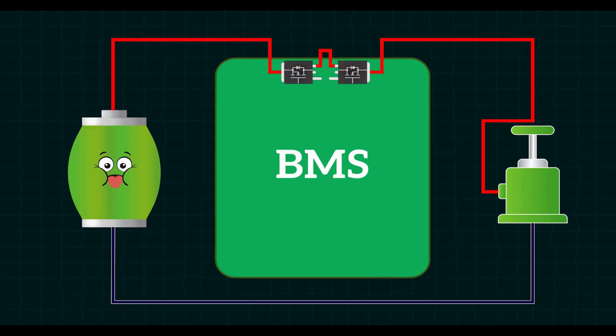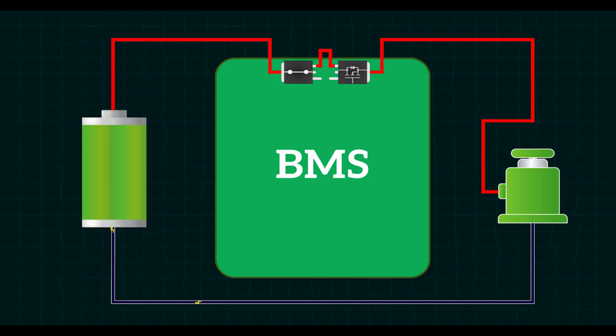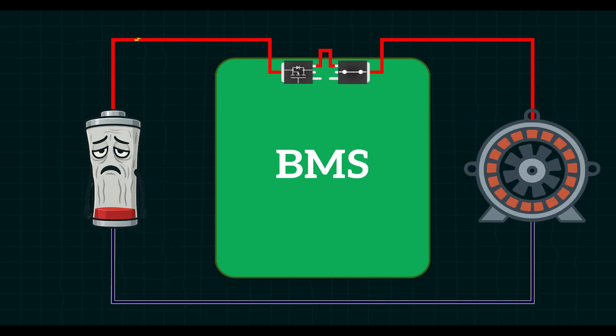Then overcharge and over-discharge protection. Charging a battery too much can be dangerous. It could overheat or even catch fire. Discharging it too much can also permanently damage the battery. Controlling MOSFETs solve this by acting as gatekeepers. During charging, if the battery voltage goes too high, the MOSFET switches off to stop more current from flowing in. During discharging, if the voltage gets too low, the MOSFET again switches off, protecting the battery from getting drained too much.